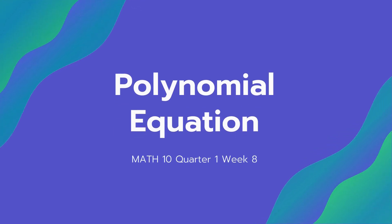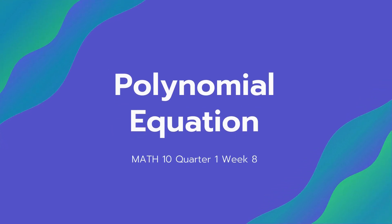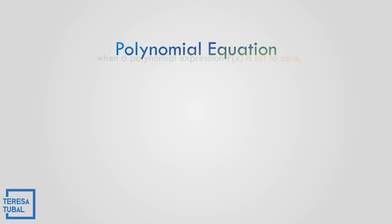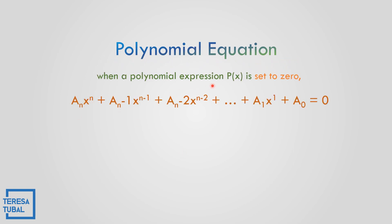Let us explore polynomial equations. So what is a polynomial equation? When a polynomial expression P of X is set to 0, that is a polynomial equation. So if there is an equal to 0, that is a polynomial equation.